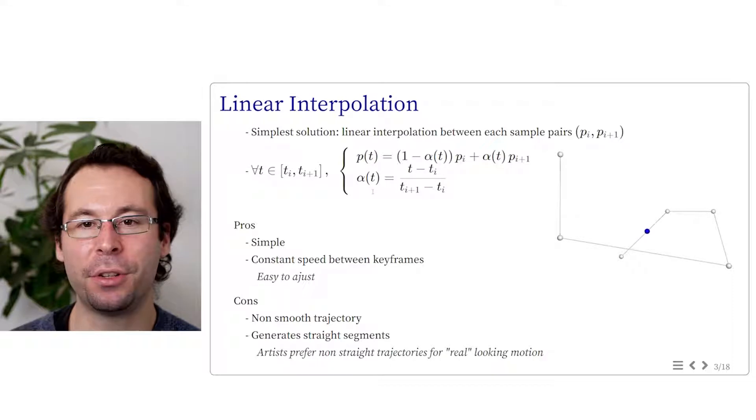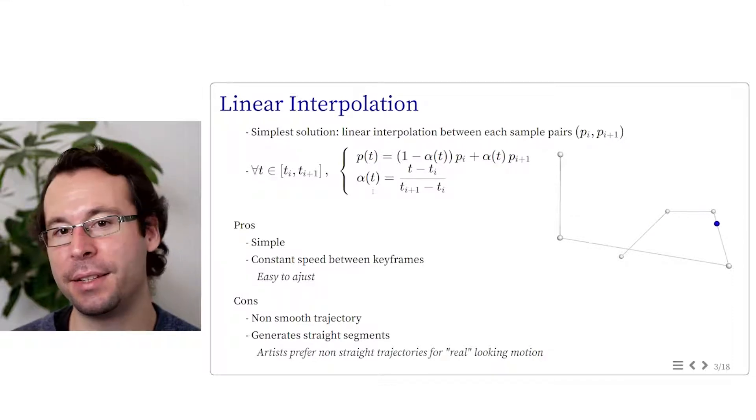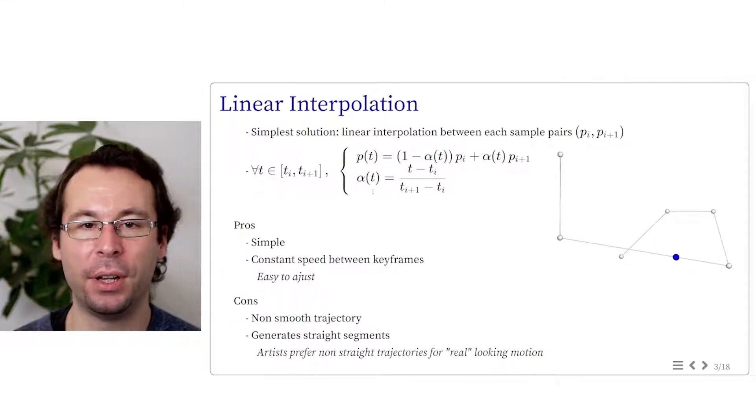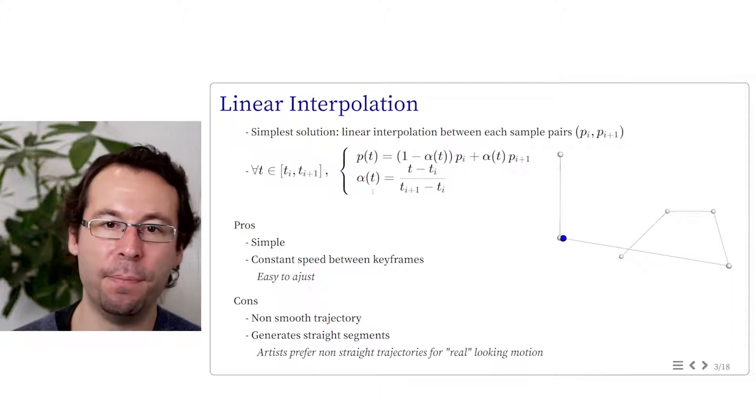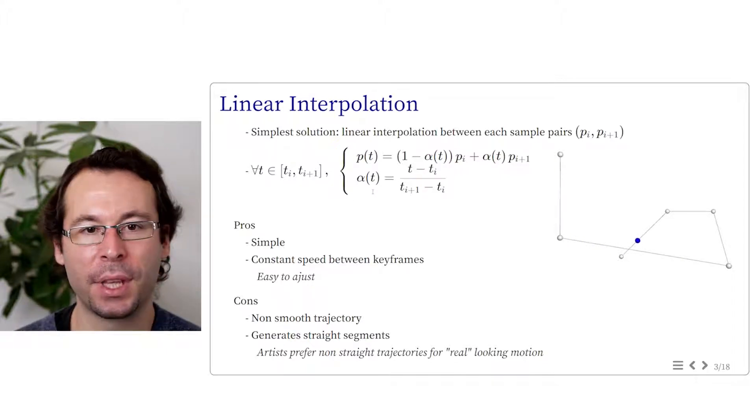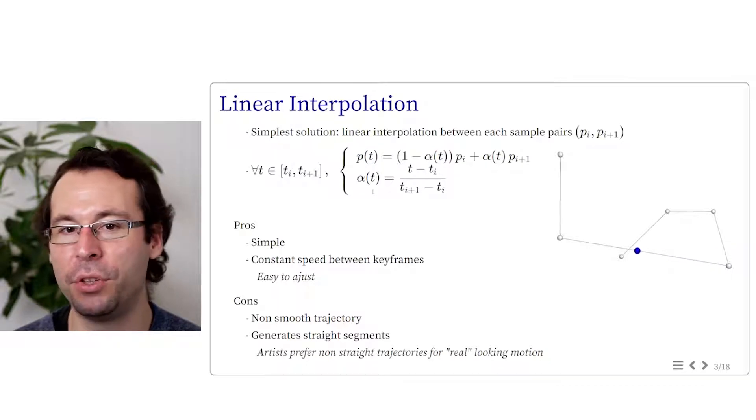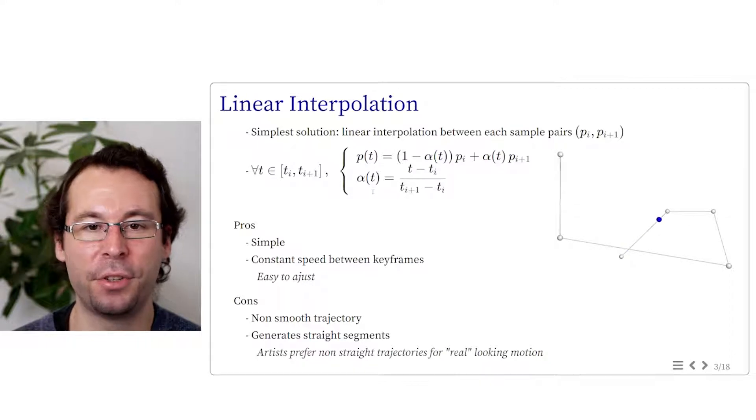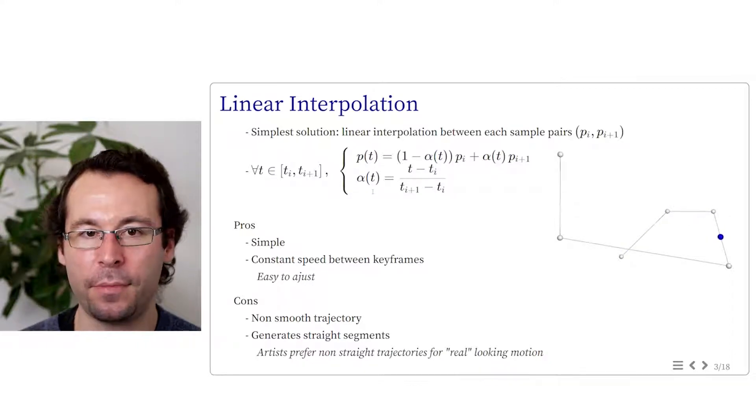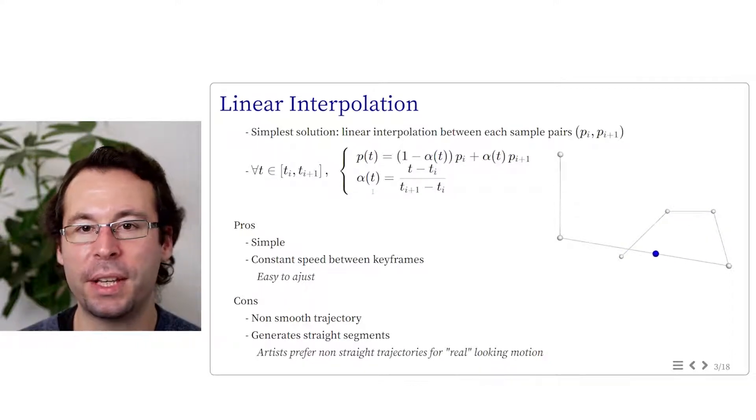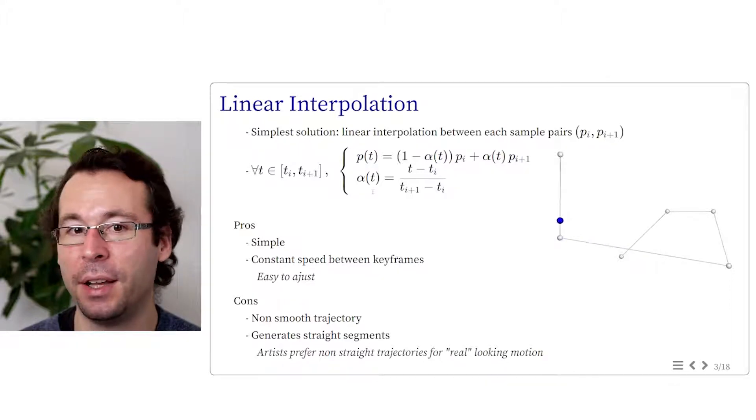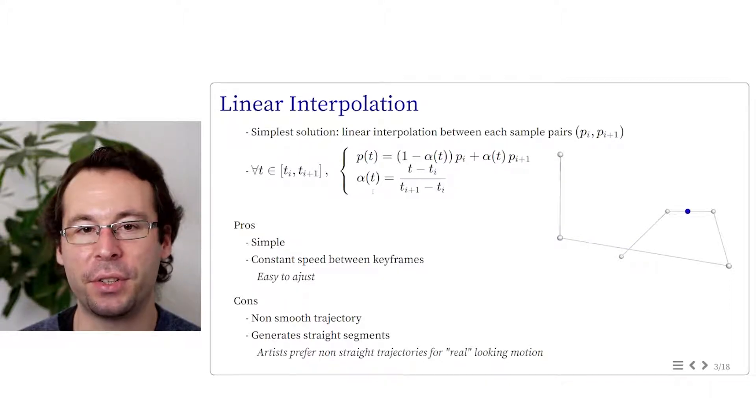Is it a good method? It has the advantage of being very simple. It's simple to express, simple to code, it's efficient. And in addition, the speed of the trajectory is constant between two keyframes, which means we can easily adjust the speed of the interpolation. So for computer scientists, it looks perfect. But with respect to interpolation results, it's not.